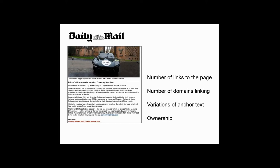Variations of anchor text are important. Google prefers variations rather than using the same phrases repeatedly. In the Coventry Motorfest example, the same words are used multiple times — one doesn't always want to use the same anchor text phrases; mix them around. Ownership also matters — if multiple links all come from sister publications on the same server or C-block, Google can see that and they don't carry as much credibility as links from genuinely different organizations.